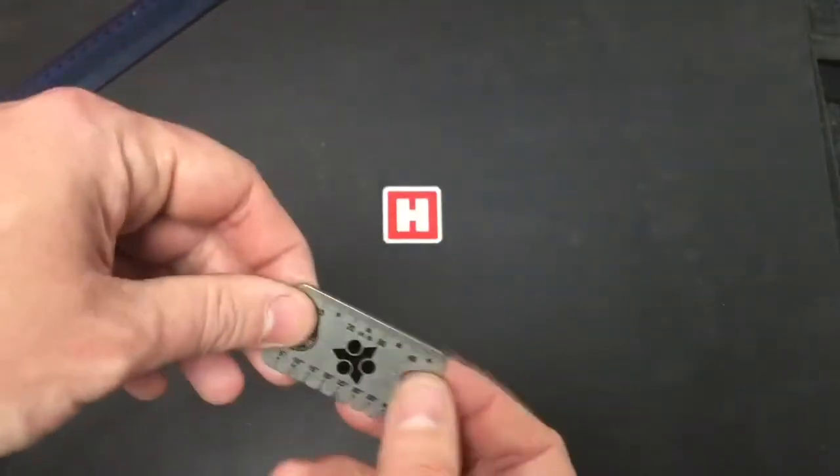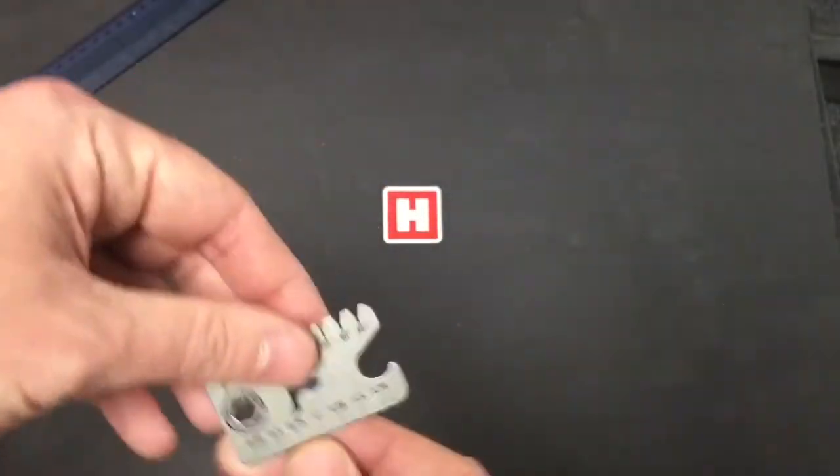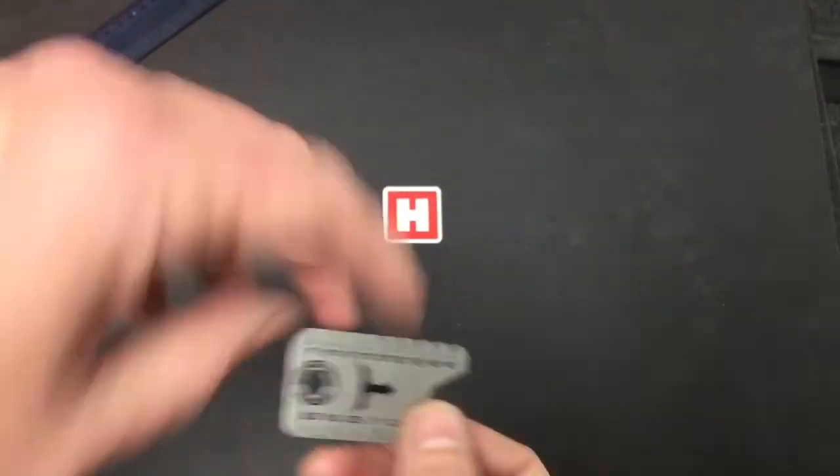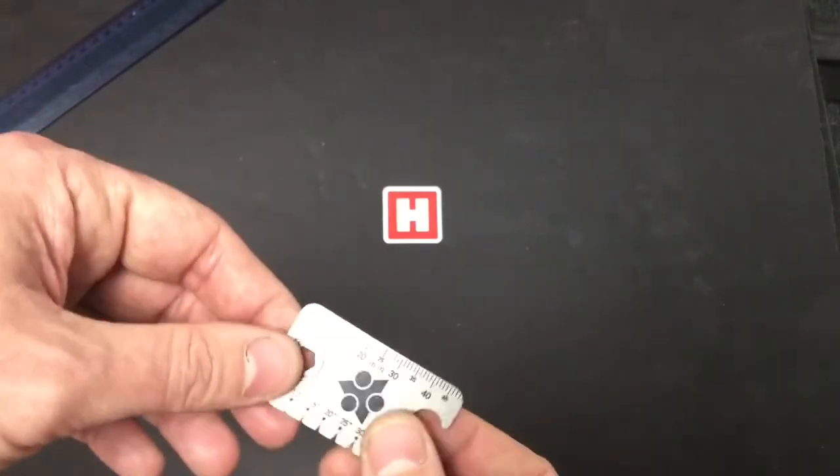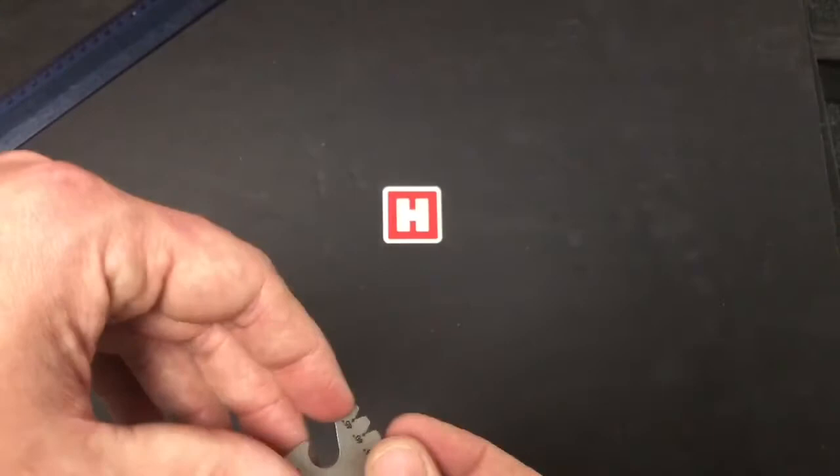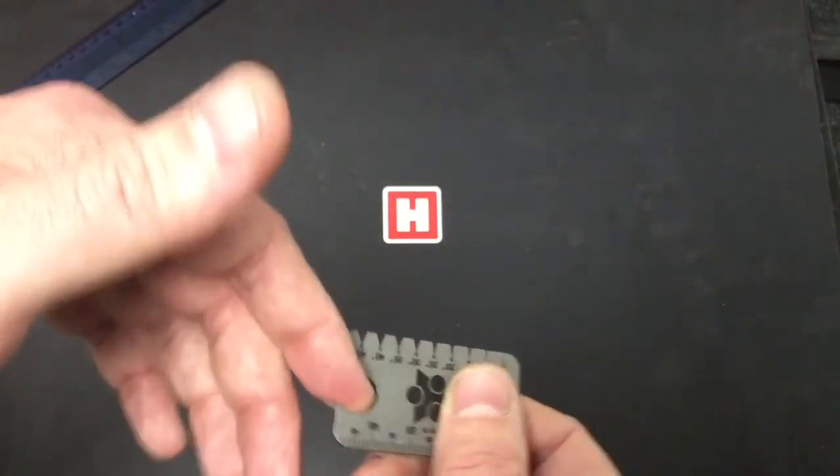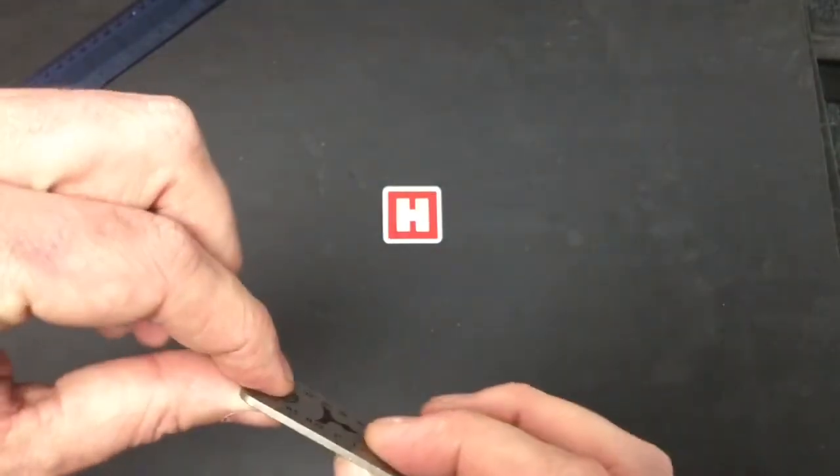So a really neat pocket tool. The weight is absolutely nothing at all. On the back we've got inch rule, centimeters on the front, quarter inch drive slot, bottle opener, and pry lever.